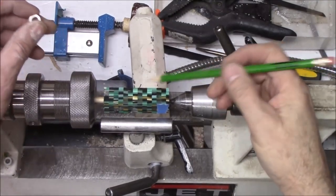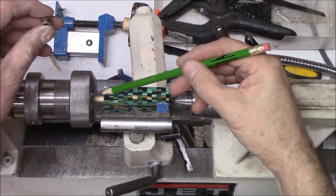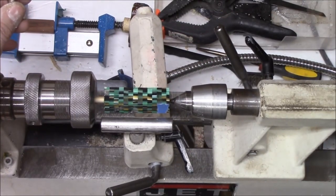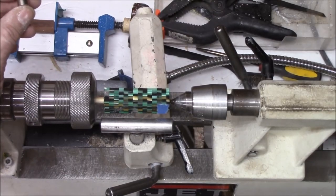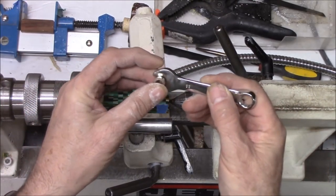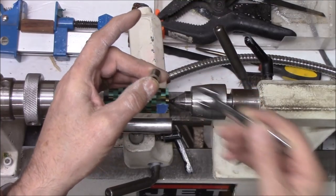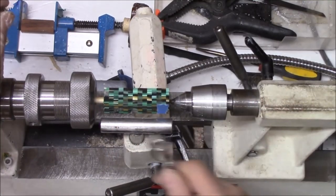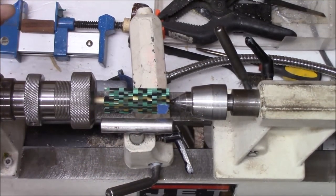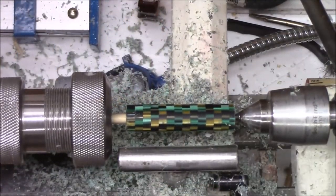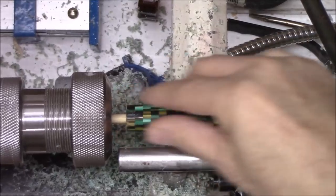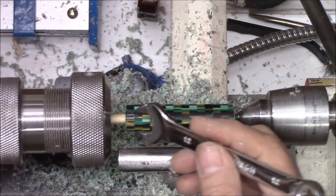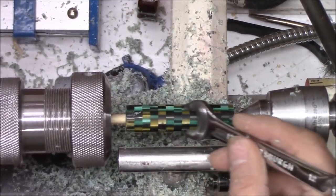Okay, since we've got the friction chuck here, I don't have a bushing, but the bushing is just under 11 millimeters. So I'm going to turn it round to 12 millimeters, and then I'll take it down to the size of the bushing.